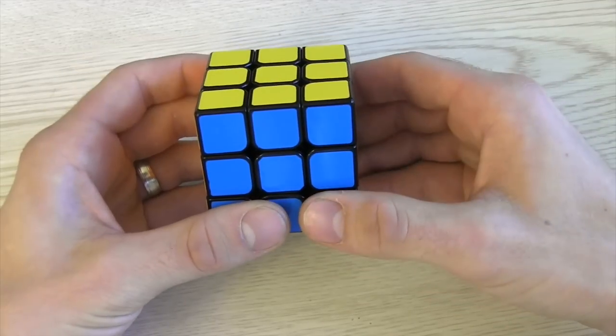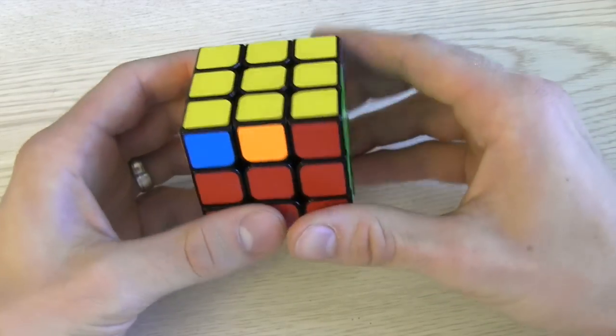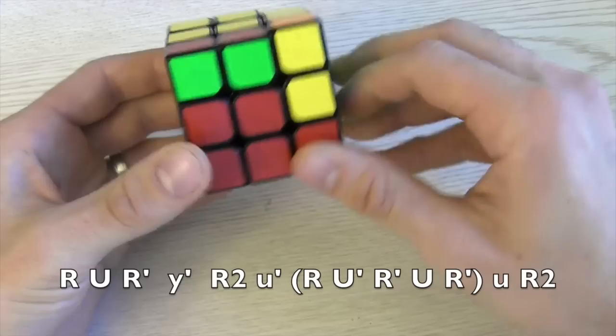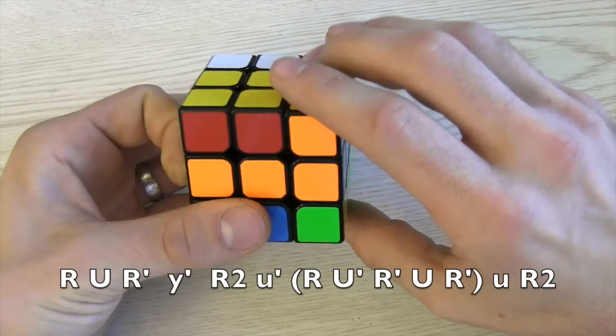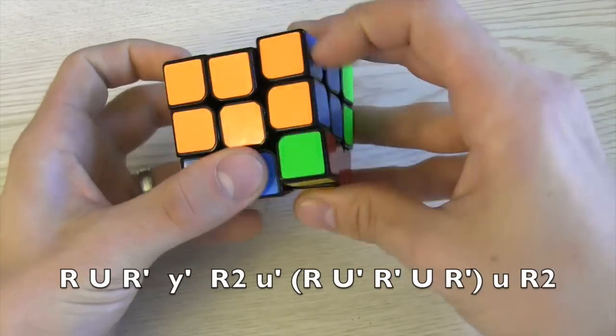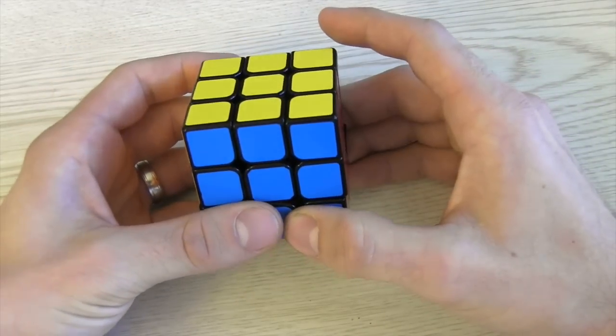Now instead of memorizing the algorithm I just repeated it until it was in my fingers. R U R prime with my right hand. Turn to where the headlights were. Then flip with my right hand. Top two faces towards my right hand. R U prime R prime U R prime. Then top two faces away from my right hand and R2.